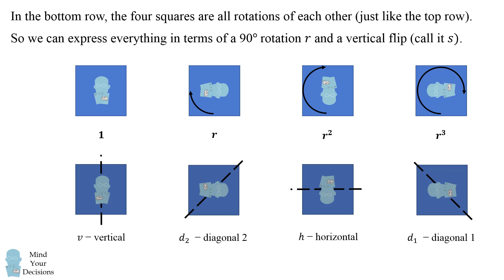Now in the bottom row, we can express everything in terms of a vertical flip and a 90 degree rotation that's repeatedly applied. So the vertical flip will be denoted as S. This second reflection can be expressed as R composed with S. We do a vertical reflection and then a rotation. Notice that we do this from right to left just as we would compose functions.